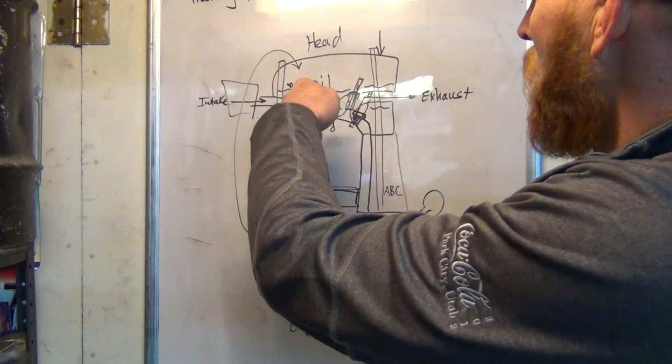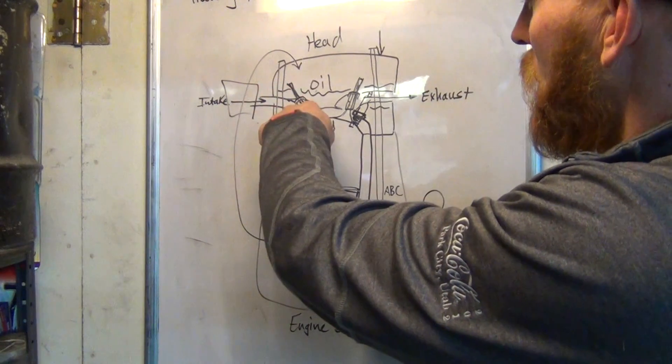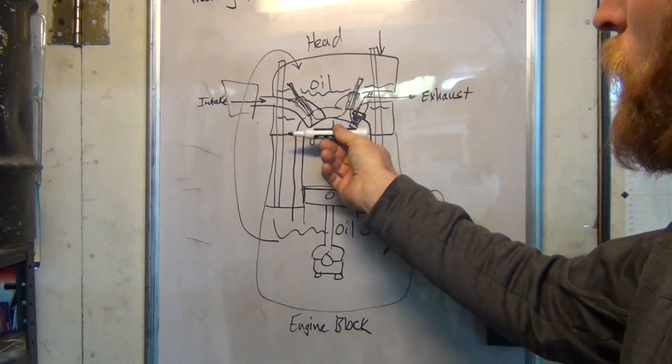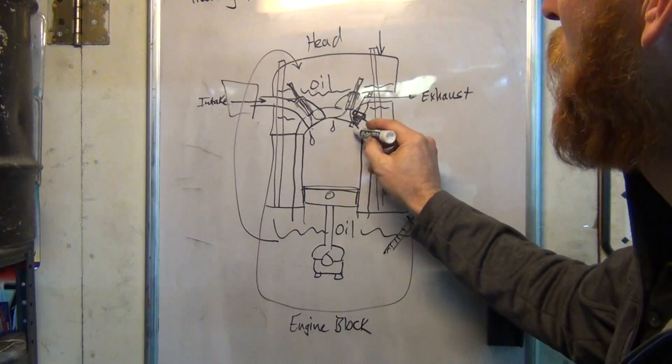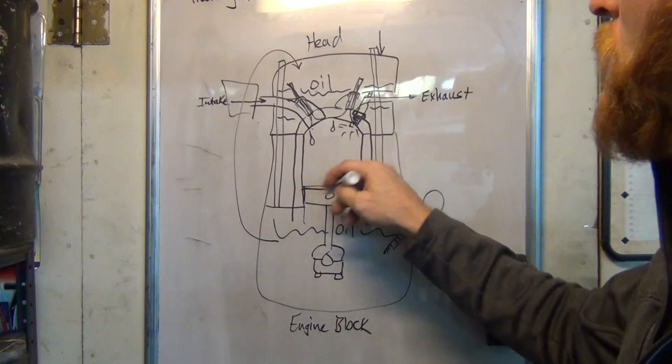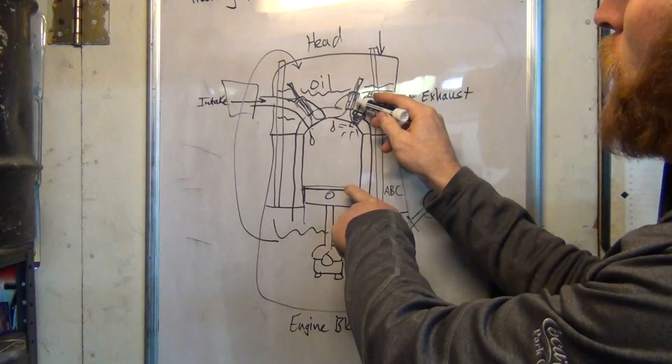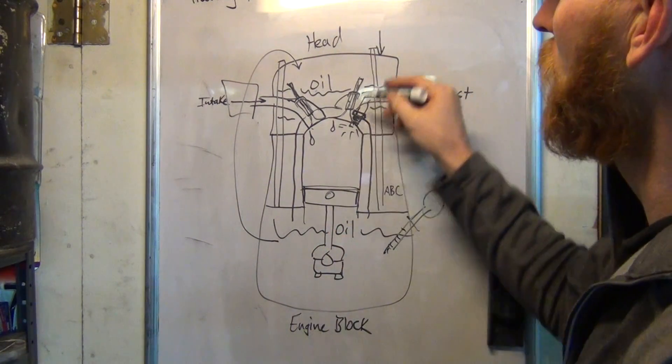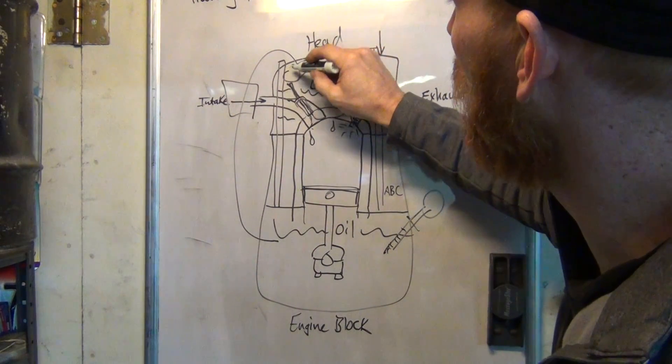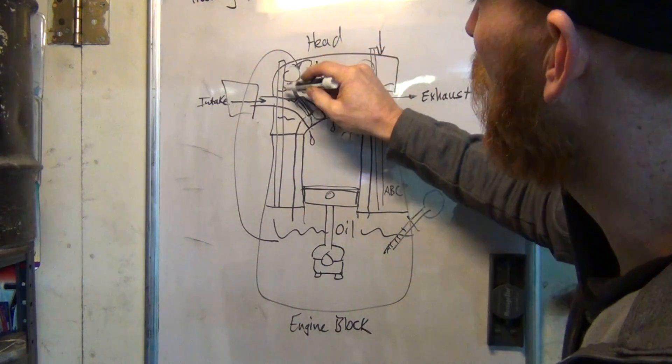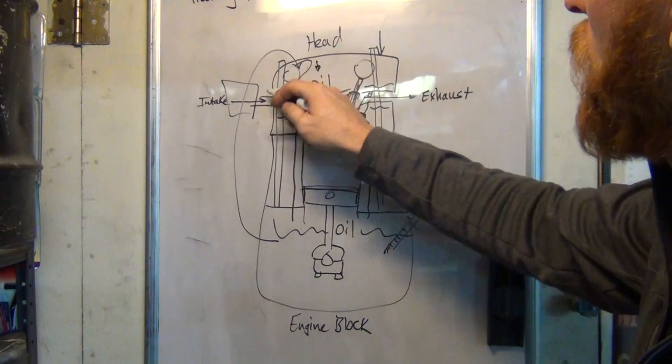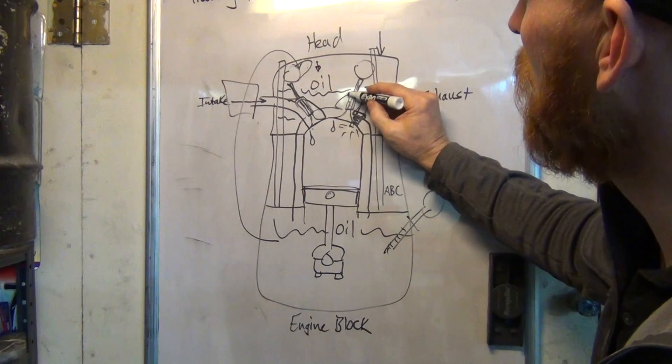So you suck it in and then the valve closes and then it gets compressed into a compressed air fuel mixture. Then the spark plug goes bang and it forces the piston down and you've got all the smoke. And then this valve opens on the exhaust and you've got little camshafts here and here with a little lobe on it and when it rotates around it pushes the valve down.